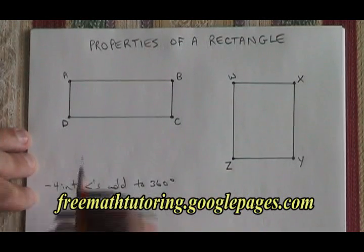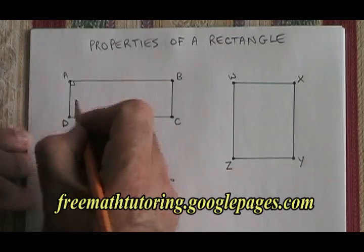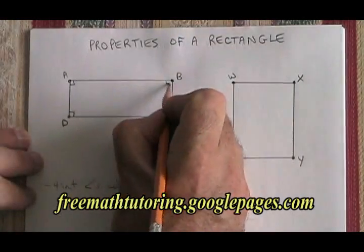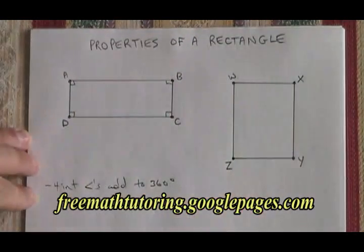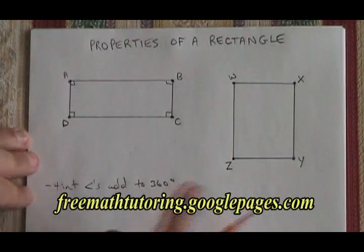In this case though, because it is a rectangle, the four interior angles all have to be exactly 90 degrees. Of course, the four 90 degree angles will add up to 360 degrees.